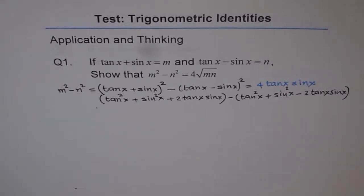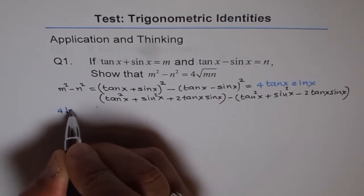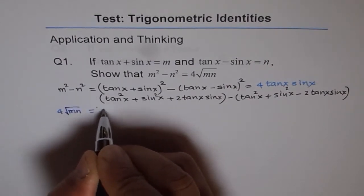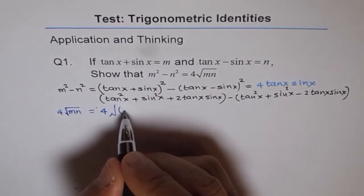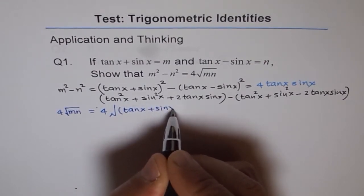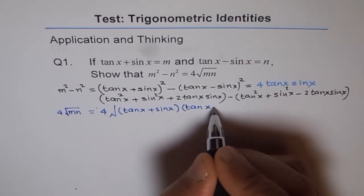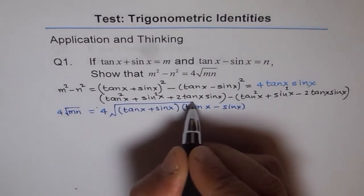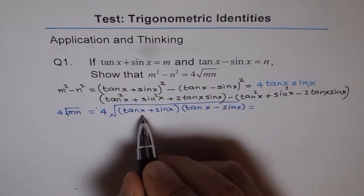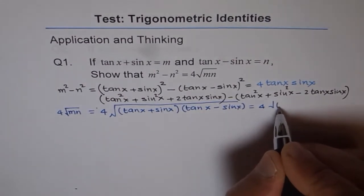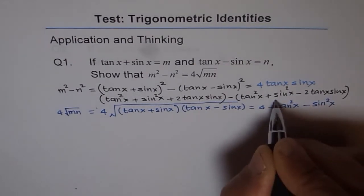Now let's work out what 4 times the square root of mn is. That equals 4 times the square root of tan x plus sin x times tan x minus sin x. Since multiplying a plus p by a minus p gives a squared minus p squared, we get 4 times the square root of tan squared x minus sin squared x.